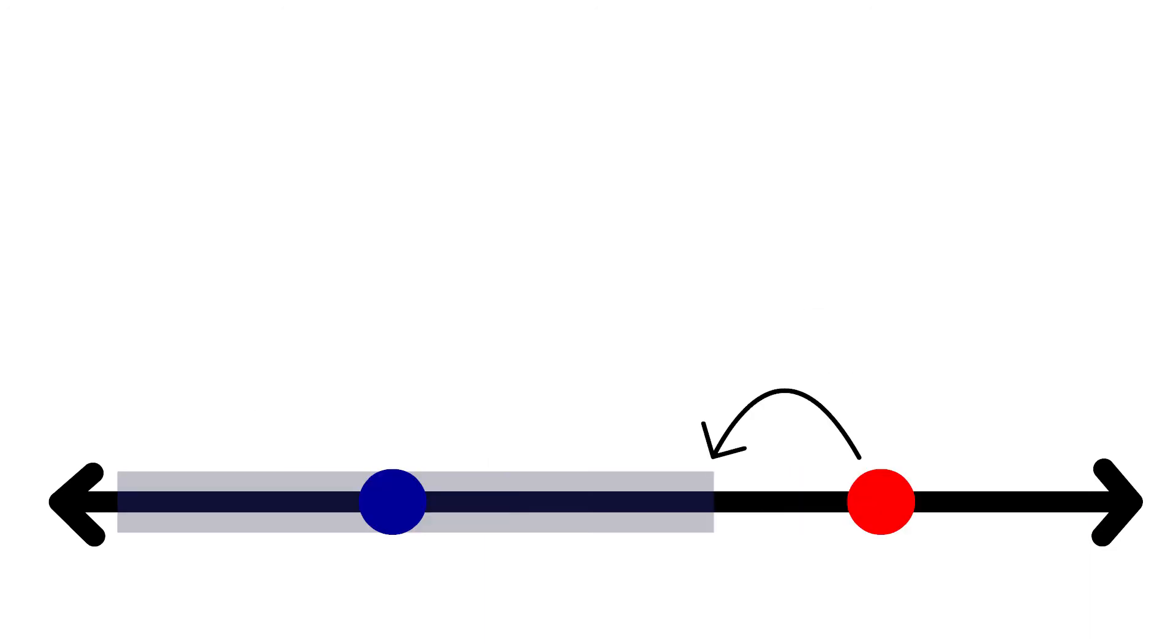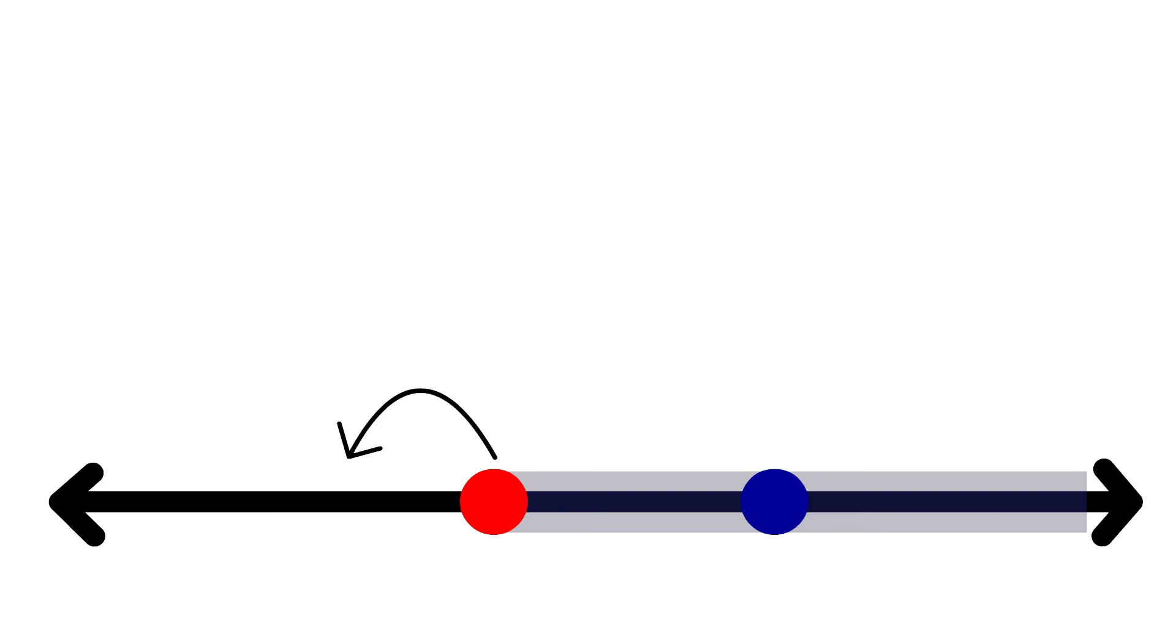So to recap, if I'm walking to the left, stepping into a hearing range decreases the left hand pull and stepping out of a hearing range increases the right hand pull.